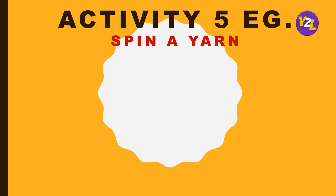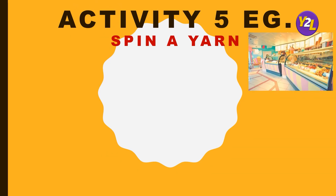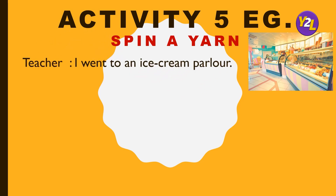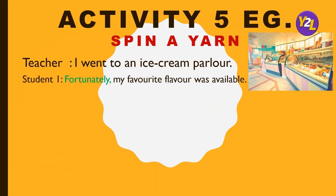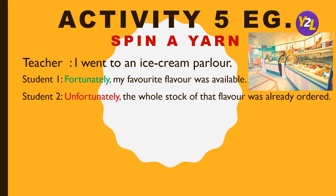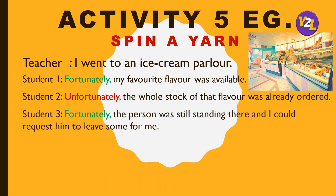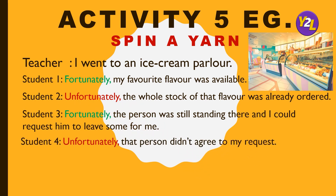For example, the teacher starts: 'I went to an ice cream parlor.' The next student says: 'Fortunately, my favorite flavor was available.' The following student says: 'Unfortunately, the whole stock of that flavor was already ordered.' Then: 'Fortunately, the person was still standing and I could request him to leave some for me.' Then: 'Unfortunately, that person didn't agree to my request.' And so on — that is how Spin a Yarn goes.